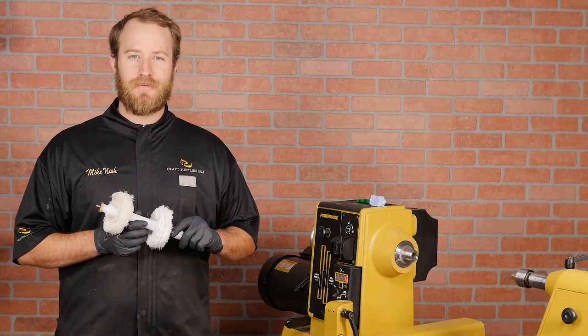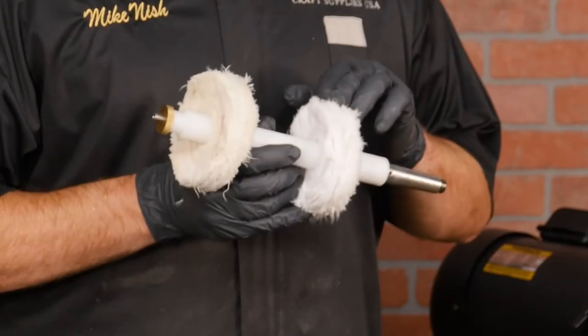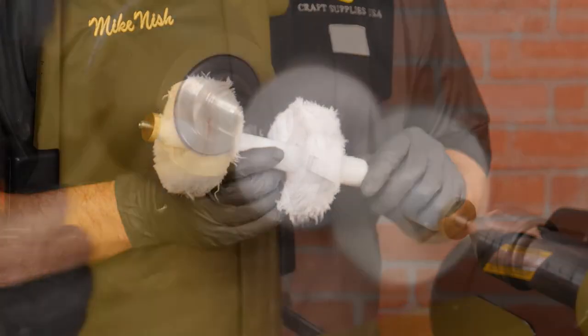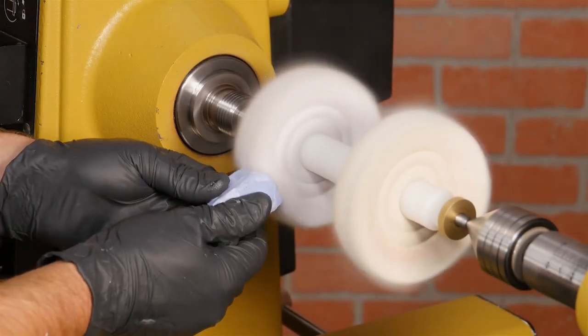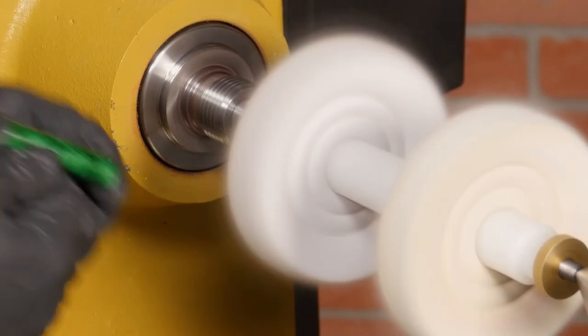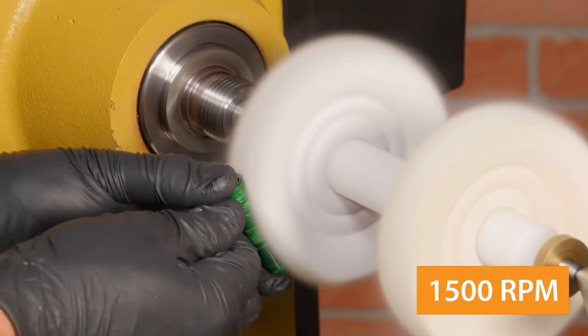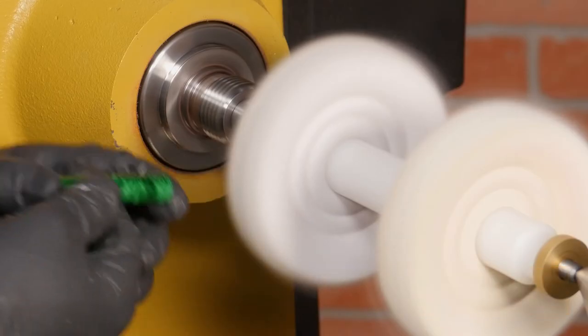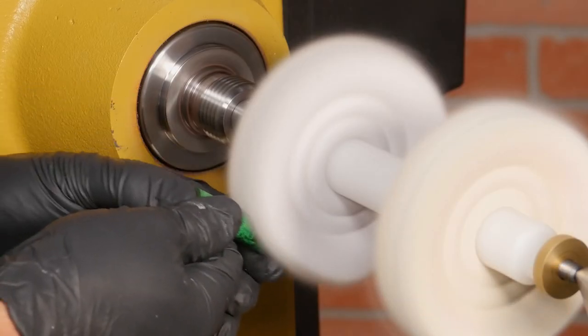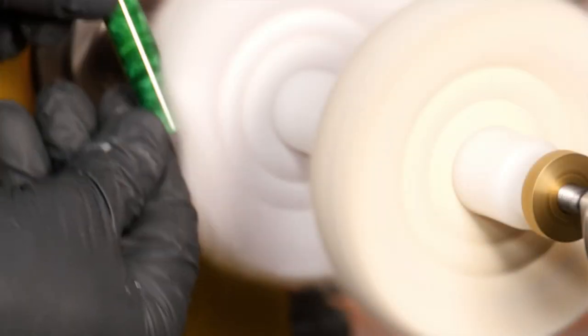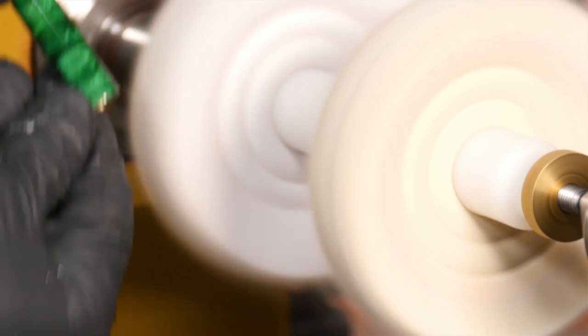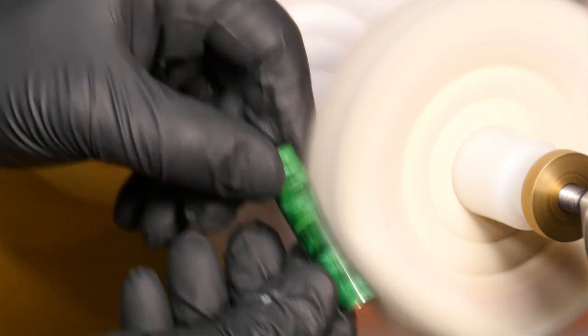You can stop here, but if you want the ultimate shine, you can use the acrylic buffing mandrel. Load the left wheel with a little of the included compound, then hold your blank to the spinning wheel with the lathe around 1500 rpm. For the best control, buff the blank in a vertical position. Buff the entire blank until all the scratches are gone, then move on to the cotton wheel for final polishing.